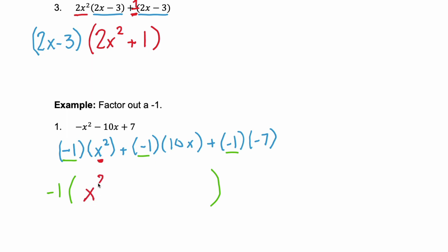The second term, I have a positive 10x. And last, I have a negative 7. Now, if you just compare the given trinomial to the second trinomial, notice that pulling out a negative 1, really what happened are the signs changed for each term.